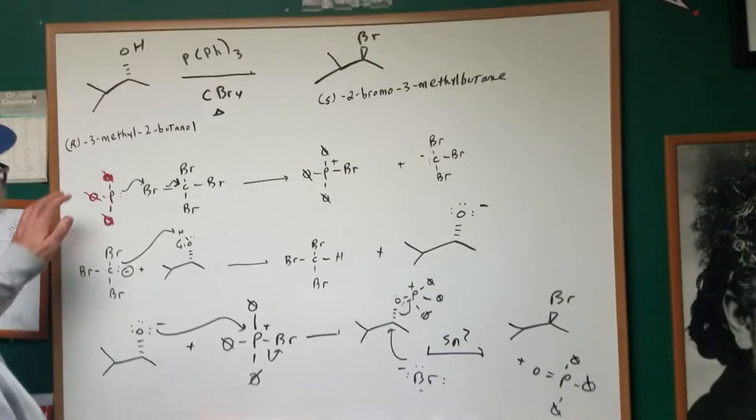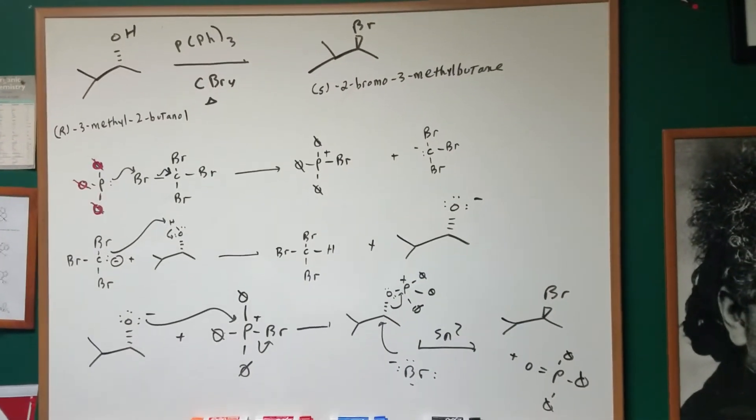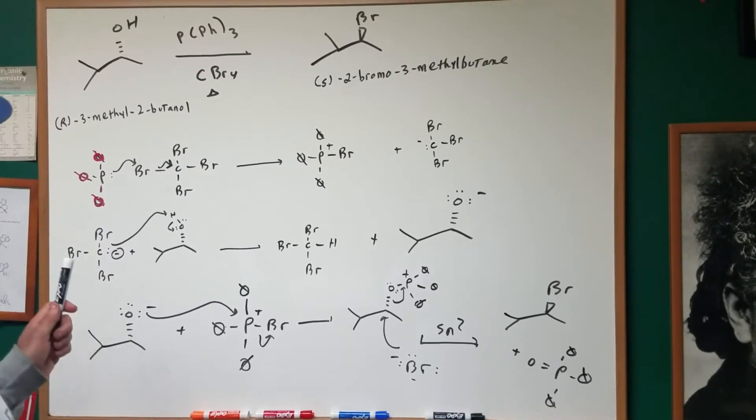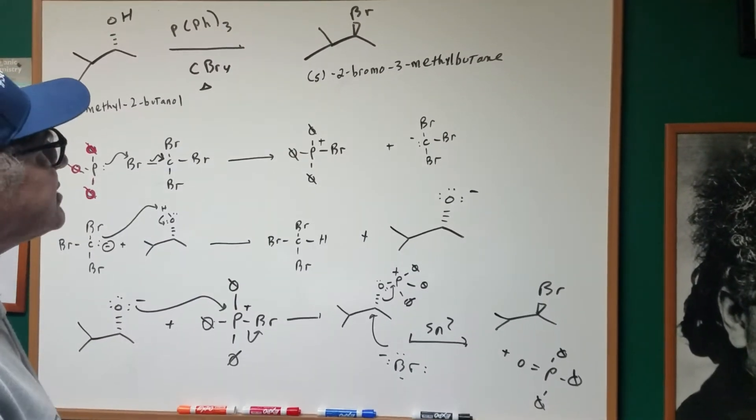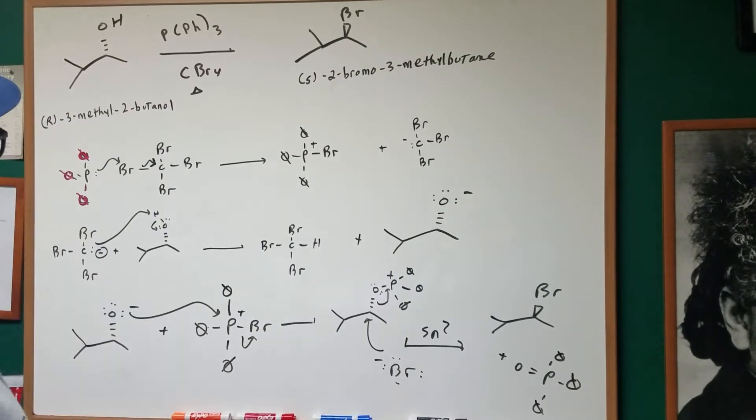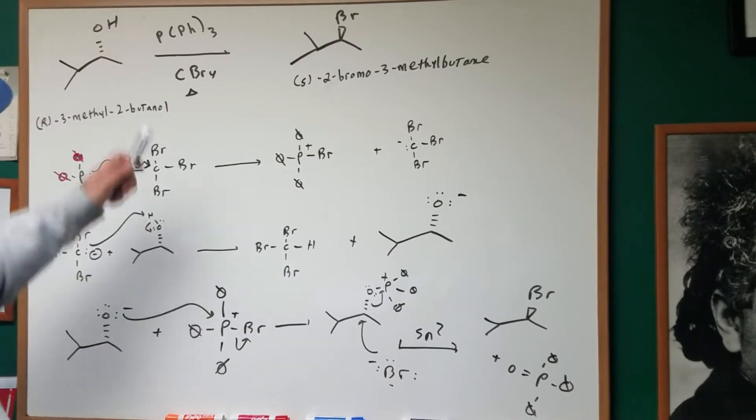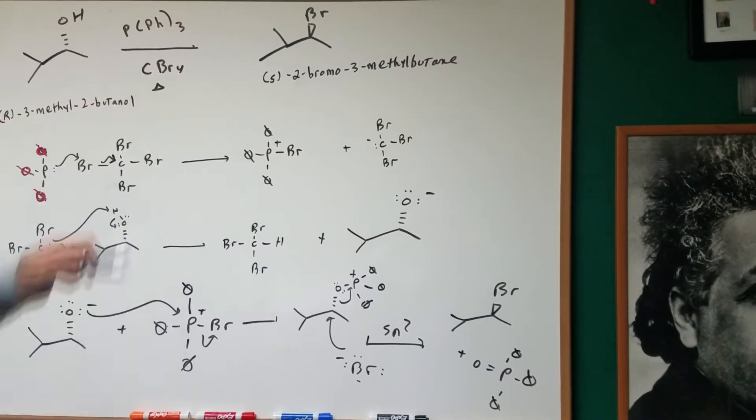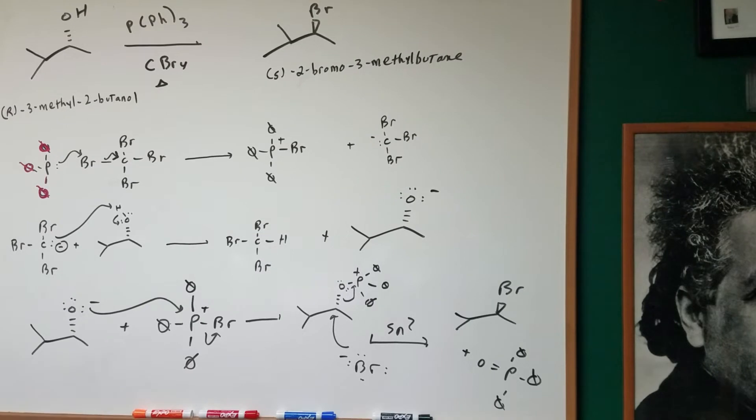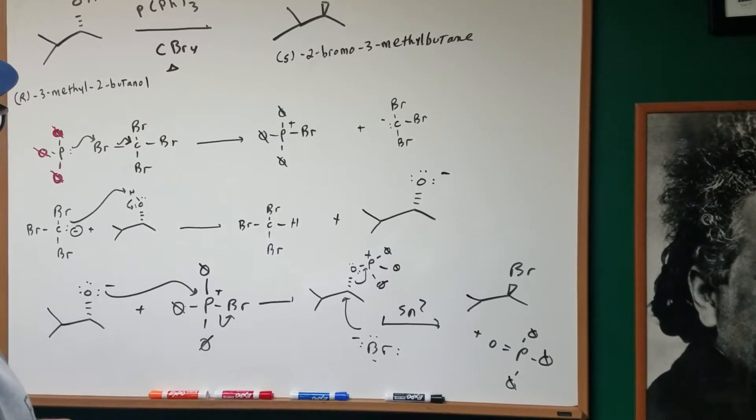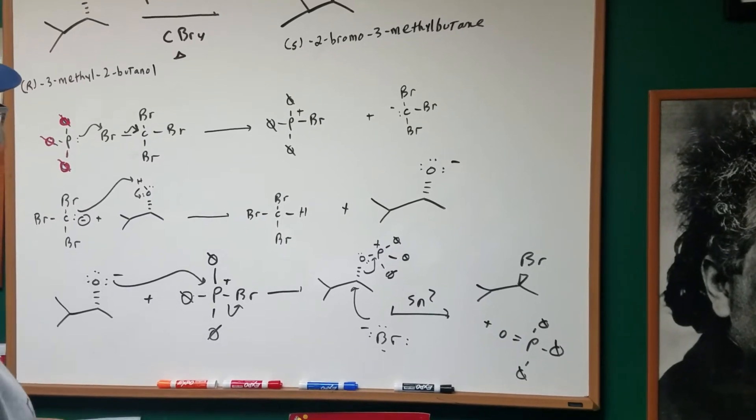Let's have a look. What I'm going to do is I am going to take R-3-methyl-2-butanol, and I'm going to convert it into S-2-bromo-3-methyl-butane, and I am going to treat it with a chemical called triphenylphosphine and carbon tetrabromide, and I'm going to heat it up. The reaction can take anywhere from 1 hour to 25 hours, depending on the substrate conditions.